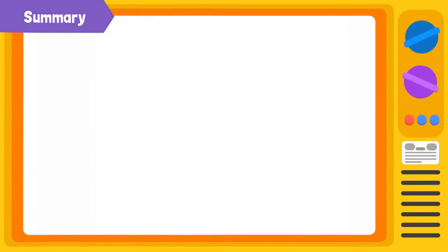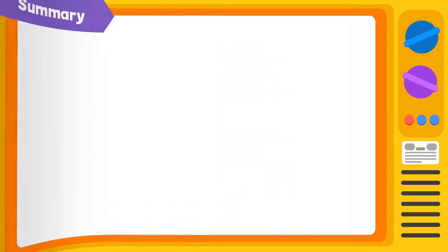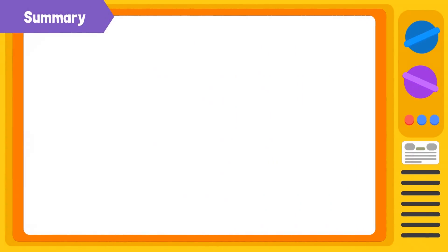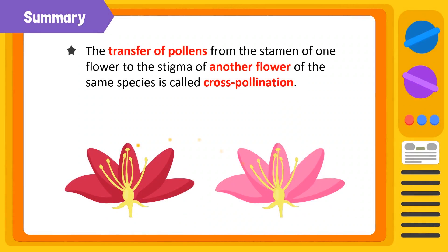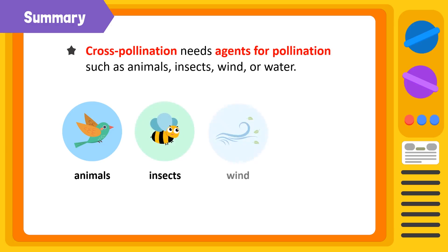Let's summarize what we have learned today. The transfer of pollen grains from the stamen to the stigma of a flower is called pollination. The transfer of pollen from the stamen to the stigma of the same flower is called self-pollination. The transfer of pollen from the stamen of one flower to the stigma of another flower of the same species is called cross-pollination. Cross-pollination needs agents for pollination, such as animals, insects, wind, or water.